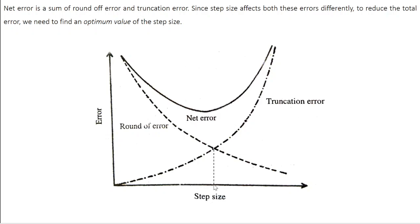So this optimum step size is the one at which total error is minimum, and it is the step size you should choose for a numerical technique. Practically, arriving at this optimum step size is not easy — it requires some trial and error. In cases where you know the exact solution, you can play with the step size and find at what value you reach closest to the exact solution. But in cases where the exact solution is not known beforehand, it is going to be a more challenging task.